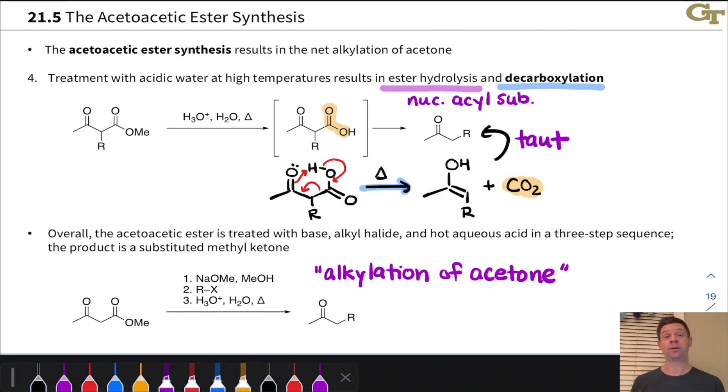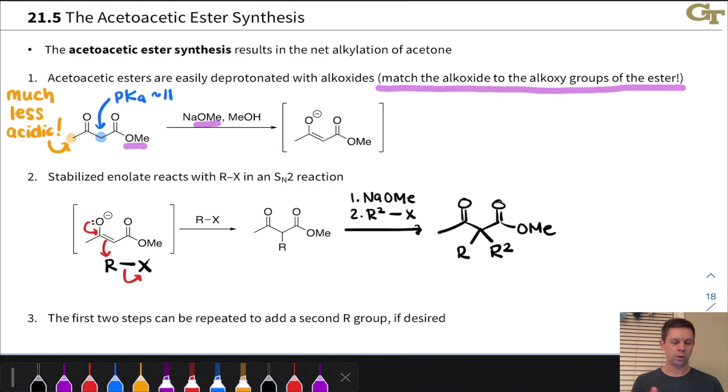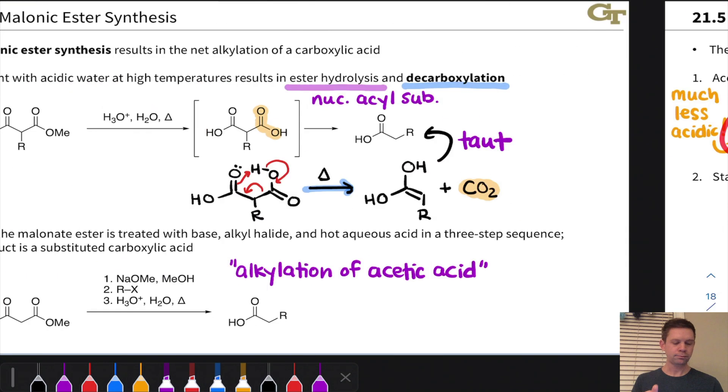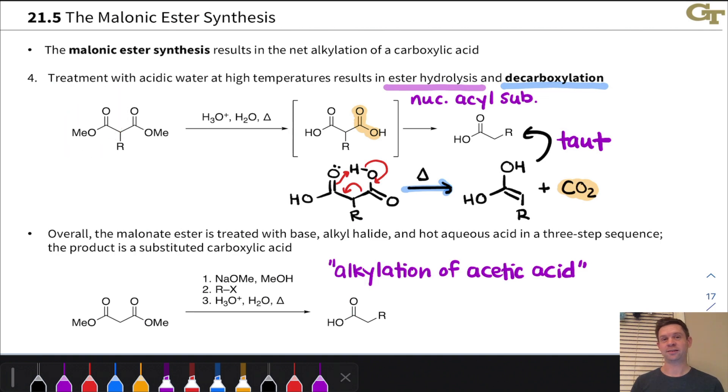And so this enables highly substituted alpha alkylated methyl ketones to be generated through an approach that would be really hard to do with LDA or something like the sodium hydride thermodynamic enolate approach or something along those lines. So keep the acetoacetic ester synthesis in mind and note the analogy here between this approach and the malonic ester synthesis. Really the only difference is here we have a ketone where we had an ester group in the malonic ester synthesis.